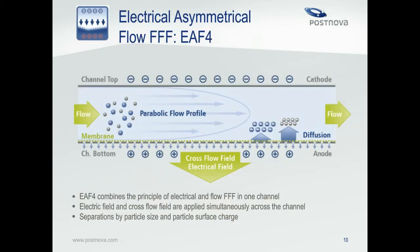The newest subtype of FFF, called electrical asymmetrical flow FFF, uses a combination of flow field and electrical field. The flow field still drives the separation by size, while the additional electrical field separates simultaneously by charge. The effect of the electric field is relatively small compared to the flow field, so this technique primarily separates by size. However, when analyzing a charged particle, protein, or polymer, multiple run conditions can be used with varying electric field. The resulting shift in retention time due to the electric field allows measurement of electrophoretic mobility, and from that, the zeta potential can be calculated.